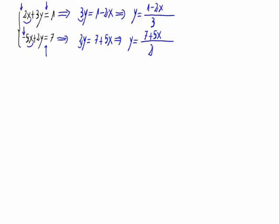Once we have this, we can see that the first equation are equal. So we have 1 minus 2x divided by 3 is equal to 7 plus 5x divided by 2.